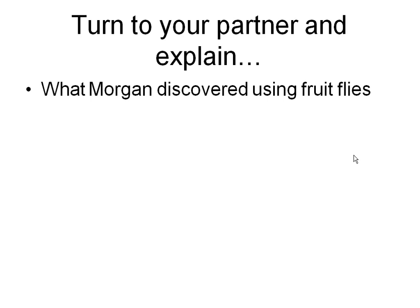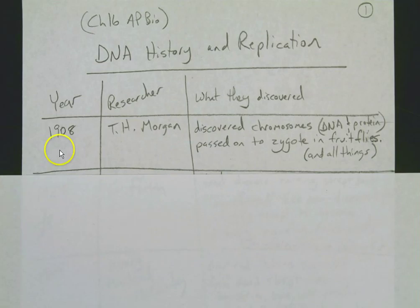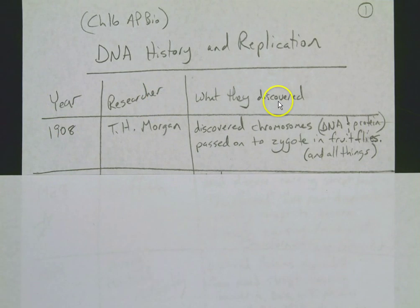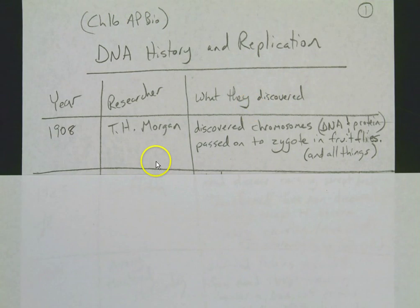Let's stop and complete our notes for T.H. Morgan. Make three columns: year, researcher, and what they discovered. T.H. Morgan discovered that chromosomes — which are DNA and protein — are passed on to the zygote in fruit flies and all living things.